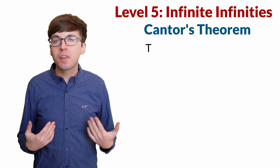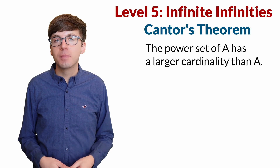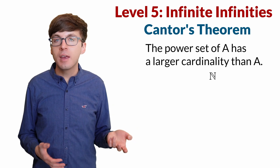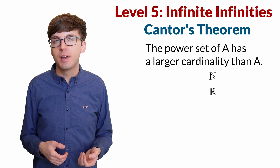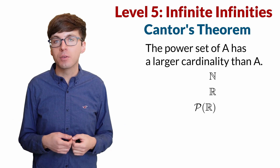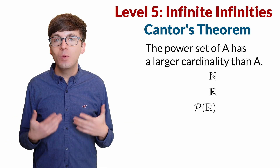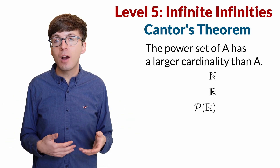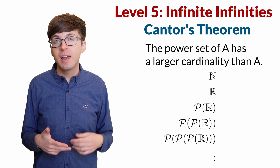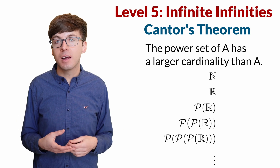Cantor's theorem tells us that a power set always has a larger cardinality than the original set. In the previous level we saw two infinite cardinalities: the natural numbers and the real numbers. Cantor's theorem gives us another one — the power set of the real numbers — which must have an even larger cardinality. But now the magic happens: we can get an even higher cardinality by taking the power set of that set, and we can keep taking power sets as many times as we want, each time getting a higher cardinality. So now we have infinitely many cardinalities of infinity.